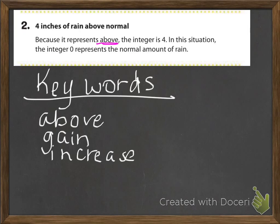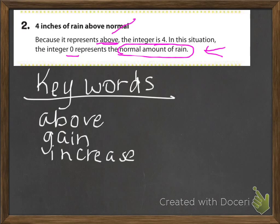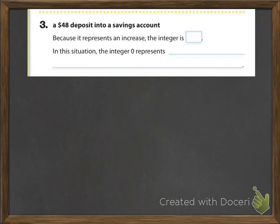Because it represents above, the integer is 4. In this situation, the integer 0 represents the normal amount of rain. It's very important that you get the explanation. Again, we have three pieces: above, the integer which is 4, and the explanation for 0. Those are the three pieces you need. Then for number 3, it says a $48 deposit into a savings account. The key word in this example is deposit.